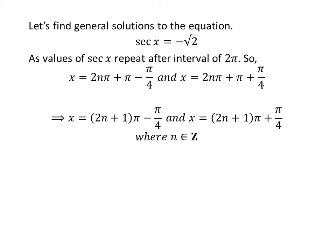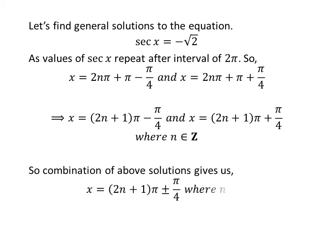Further simplification gives us the general solutions as 2 times n plus 1 times pi minus pi upon 4, and 2 times n plus 1 times pi plus pi upon 4. Combining these, the general solution of the equation is 2 times n plus 1 times pi plus or minus pi upon 4, where n is an integer.